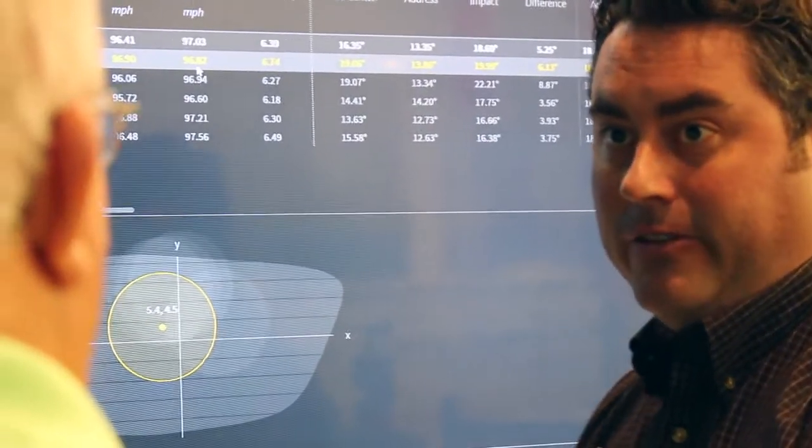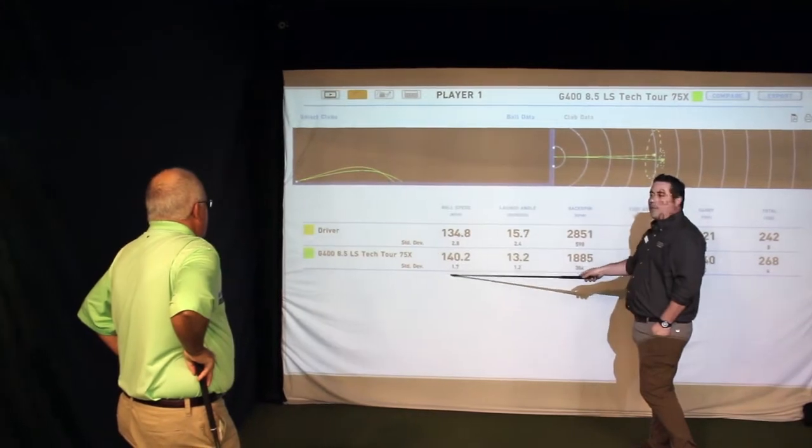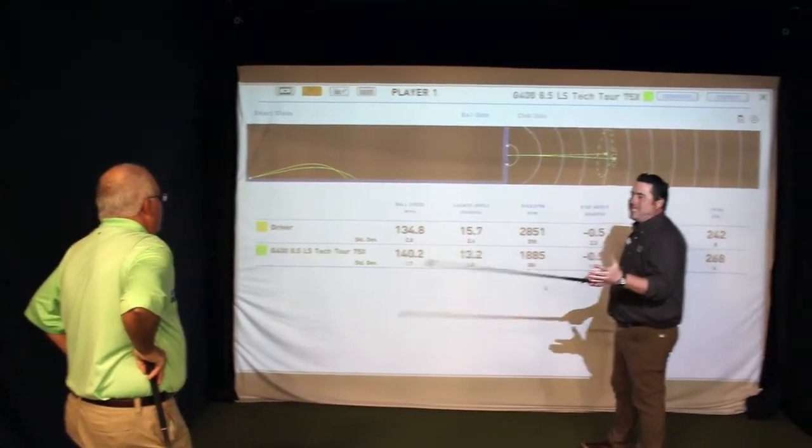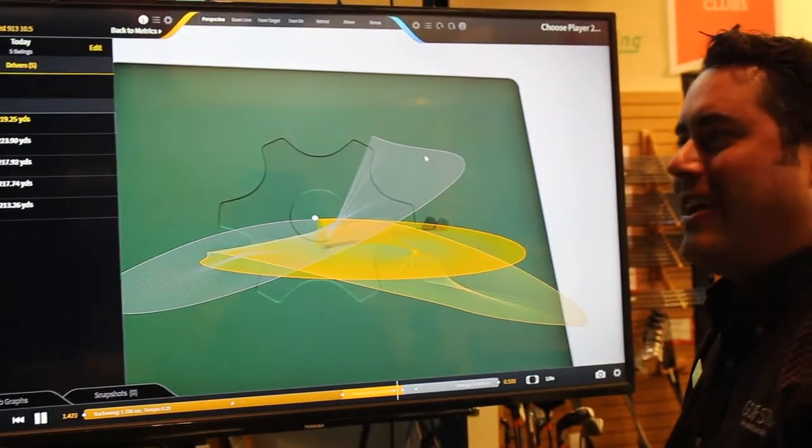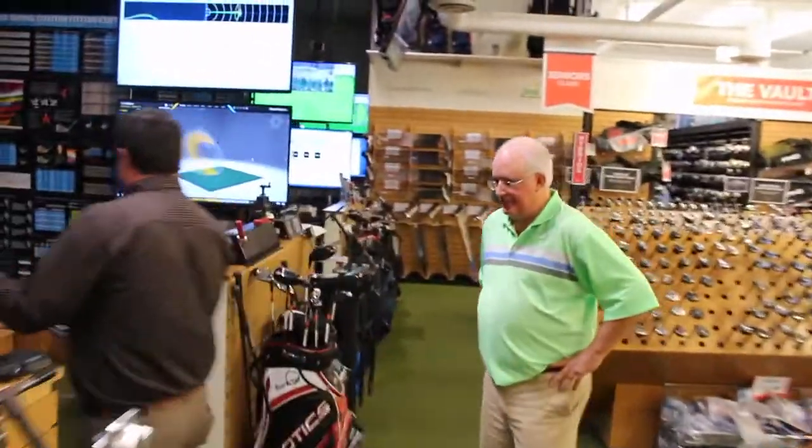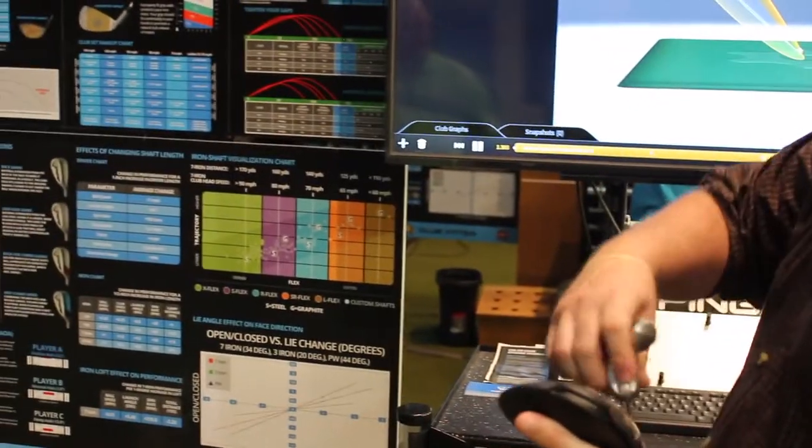Some guys kind of snap the towel at the top, other guys are more smooth, like Freddie Couples, building down towards impact. So based on how you uniquely swing the golf club, we can select the right shaft, right head, all those things together to really find that performance.